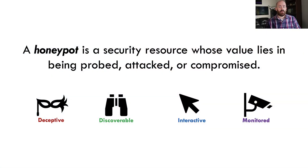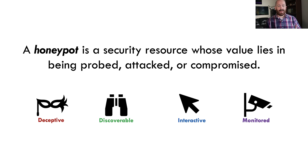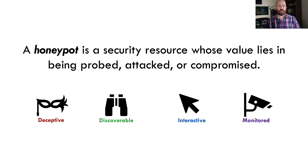Most folks in the audience have probably at least heard of a honeypot. Formally, we define a honeypot as a security resource whose value lies in being probed, attacked, or compromised. More simply, it's something fake that we hope attackers will interact with for some benefit to the network defender. There are lots of types of honeypots, but they ultimately have four things in common: they are deceptive, discoverable, interactive — meaning the attacker can exchange data with them — and because they're interactive, we can monitor that interaction through logging or alerting.